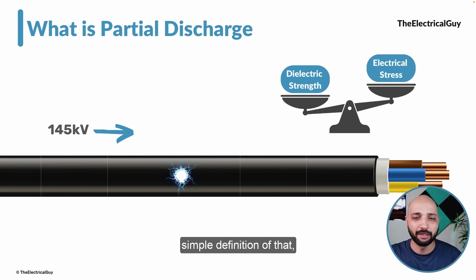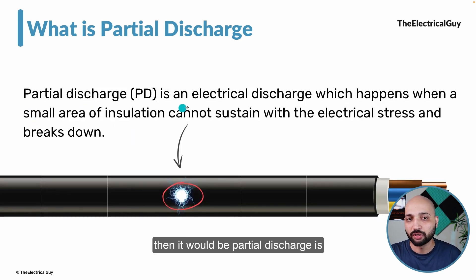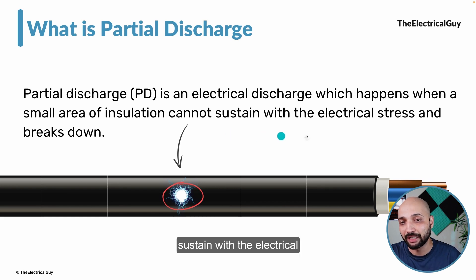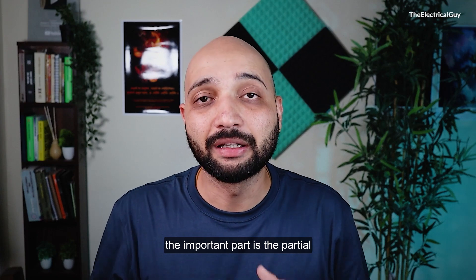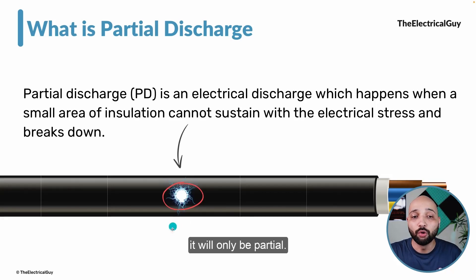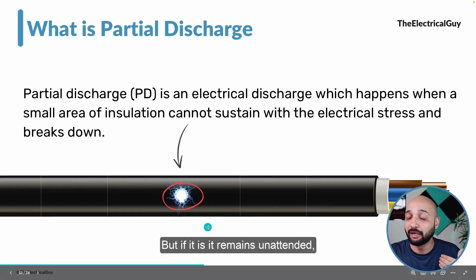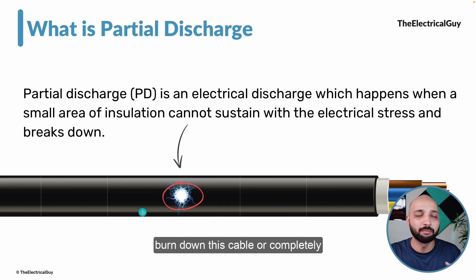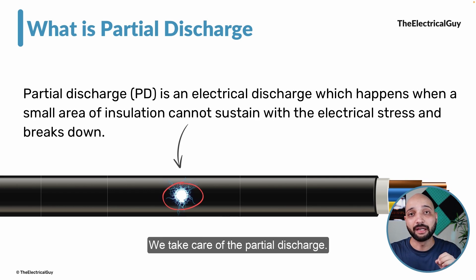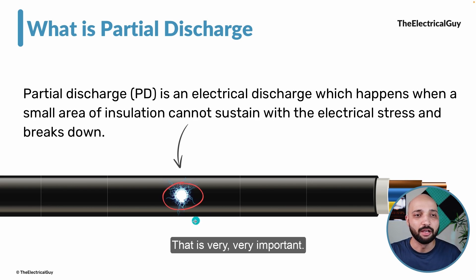A simple definition: partial discharge is an electrical discharge that happens when a small area of insulation cannot sustain the electrical stress and breaks down. The cable example we saw illustrates exactly this. Importantly, partial discharge starts slow — initially it is only partial — but if it remains unattended it has full potential to completely burn down the cable or damage the equipment, and poses a risk to personnel working nearby.